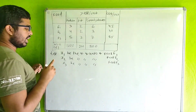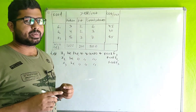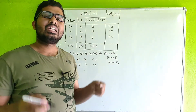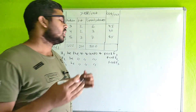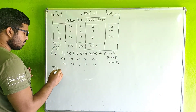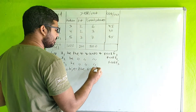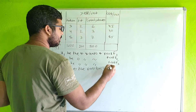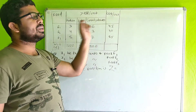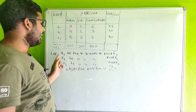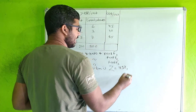Now we will see the decision variables. The next step is the objective function. The objective function is based on the number of units of food — 45 into x1.